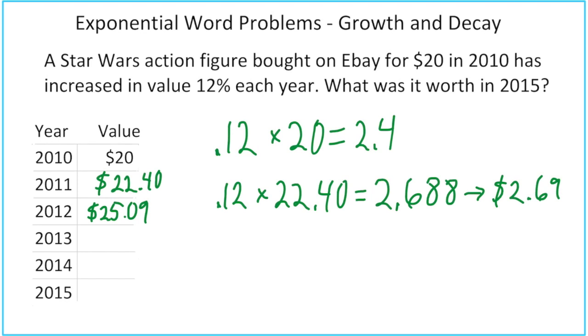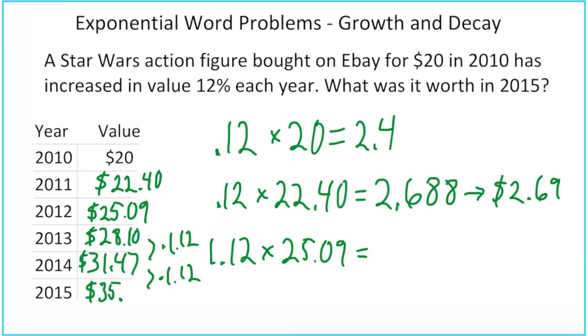And then I would just have to keep doing this process, which is kind of taking a long time. I know there's only three more answers to find, but it's kind of a long process. So how can we make this a little faster? One way to make it a little faster is if I want to know the final value at the end of that year, I need like 112%. So if I multiply 1.12 times 25.09, that will actually give me the value in 2013. I get $28.10 when I round it to the nearest penny. So I could go ahead and continue to just multiply by 1.12, and that would lead to my final answer: $35.25.